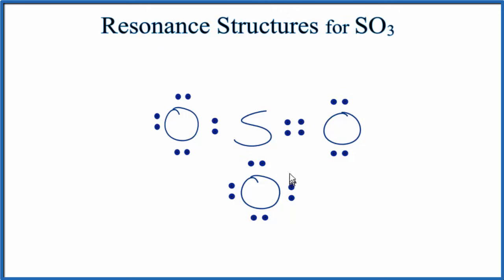But there's another way we could draw this. We could take these electrons, put them here, and then put our double bond here. So it's kind of a mirror image but it's a different way you could draw it and it's considered a resonance structure.